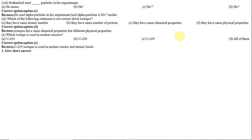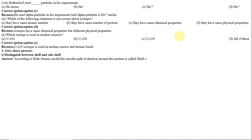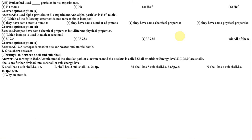Question 2, Short Answers. Number 1: Distinguish between shell and subshell. According to Bohr Atomic Model, the circular path of an electron around the nucleus is called a shell, orbit, or energy level — for example, K, L, M, N shells. Shells are further divided into subshells or sub-energy levels. K shell has 1 subshell: 1s. L shell has 2 subshells: 2s, 2p. M shell has 3 subshells: 3s, 3p, 3d. N shell has 4 subshells: 4s, 4p, 4d, 4f.